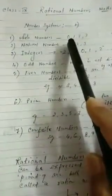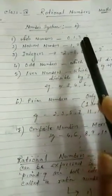Now I will give you examples of these types of numbers. First, whole numbers. So whole numbers start with 0, then 1, 2, 3, 4, and 5 and up to infinity.